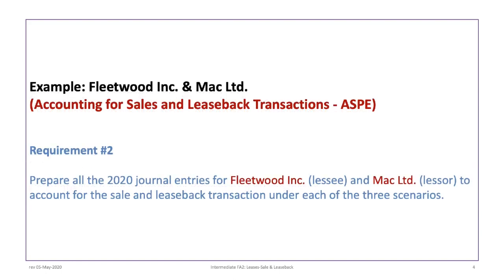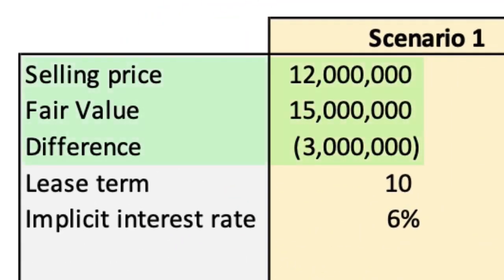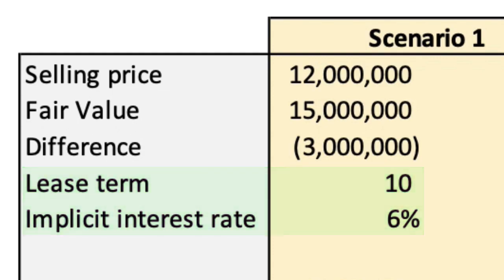Requirement 2 asks us to prepare all the 2020 journal entries for Fleetwood Incorporated (lessee) and Mac Limited (lessor) to account for the sale and leaseback transaction under each of the three scenarios. Let's start with scenario number one where the selling price is $12,000,000 versus a $15,000,000 fair value, resulting in a difference of $3,000,000. The lease term is 10 years and the implicit rate in the lease is 6%, known to the lessee.